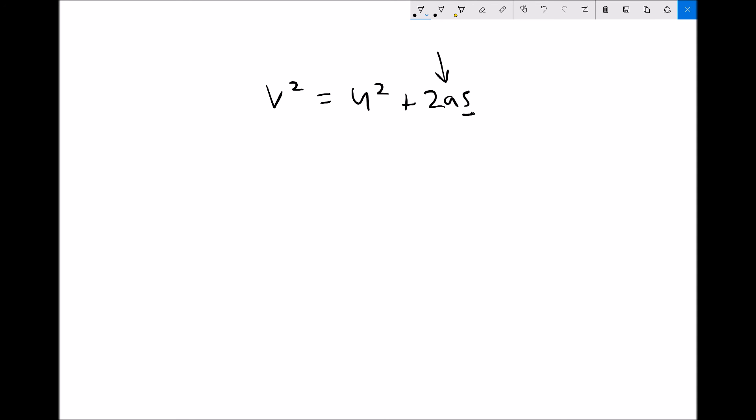So the first function we're going to perform to get rid of the u squared is we're going to subtract u squared from each side of that equation.